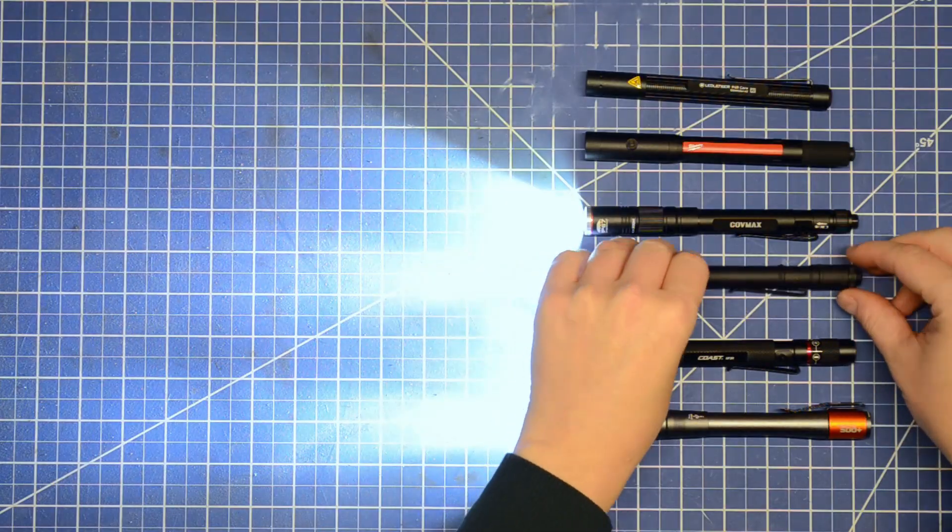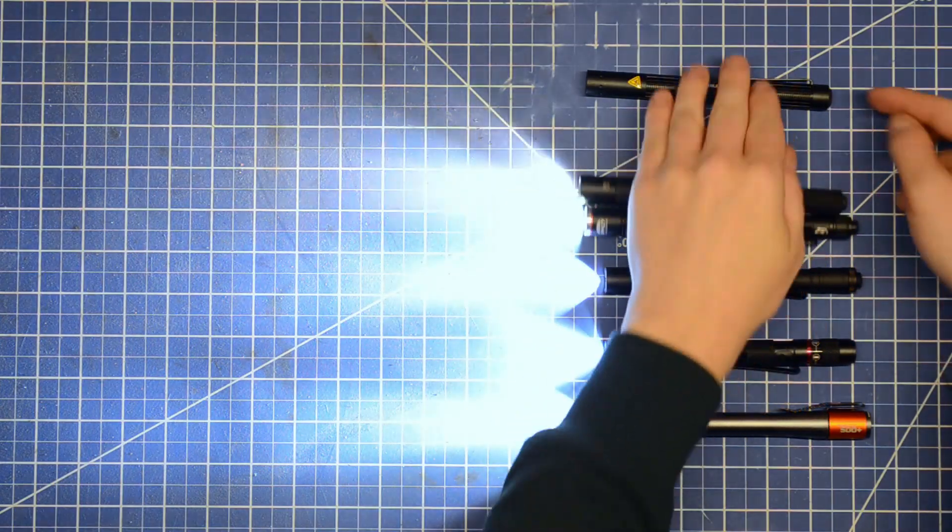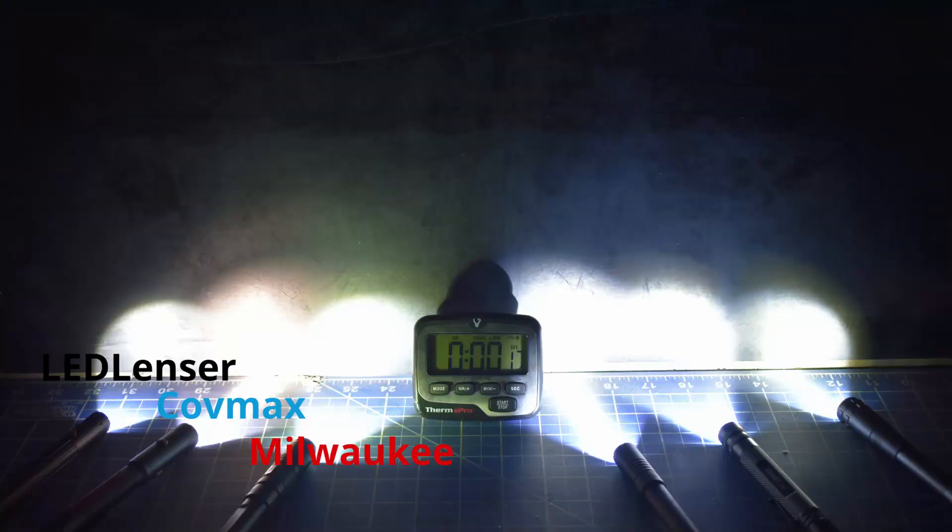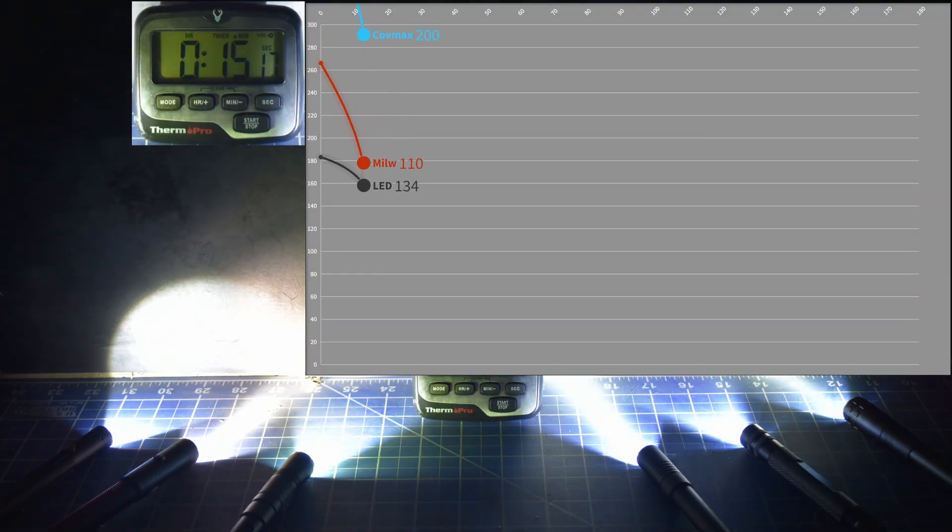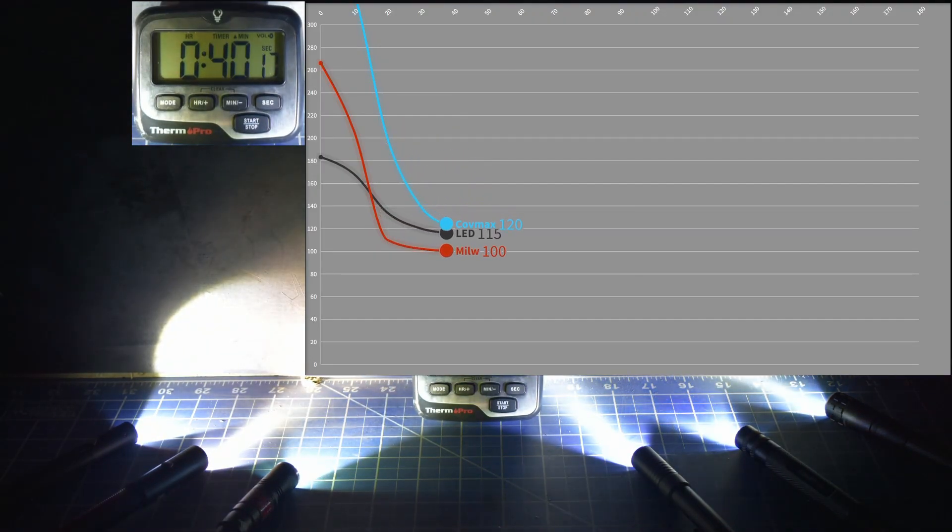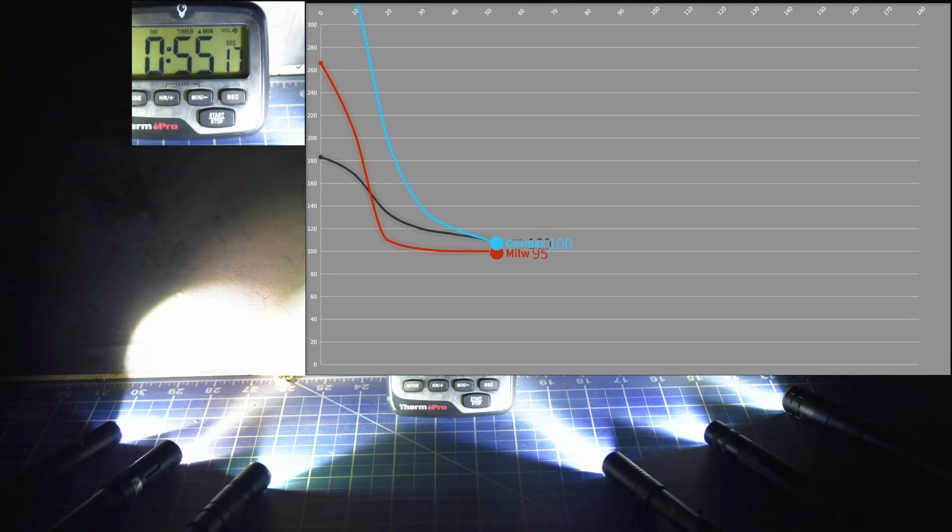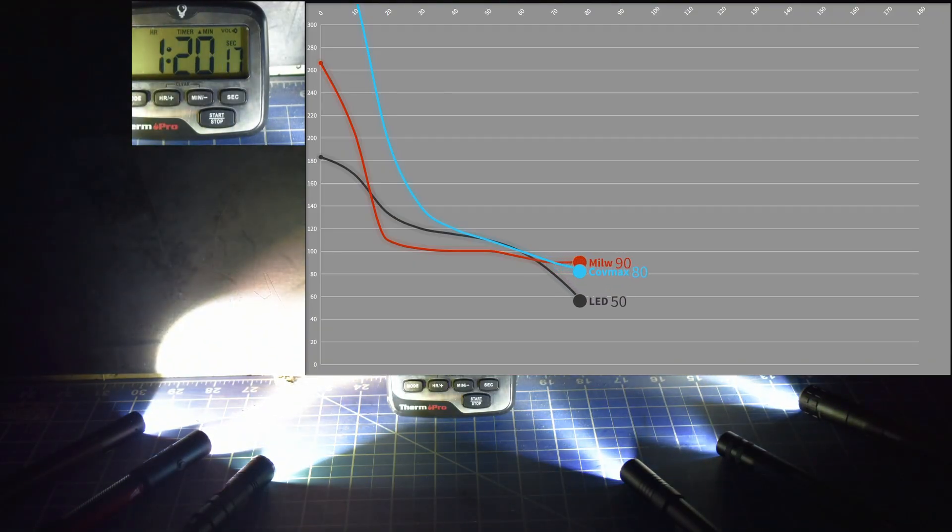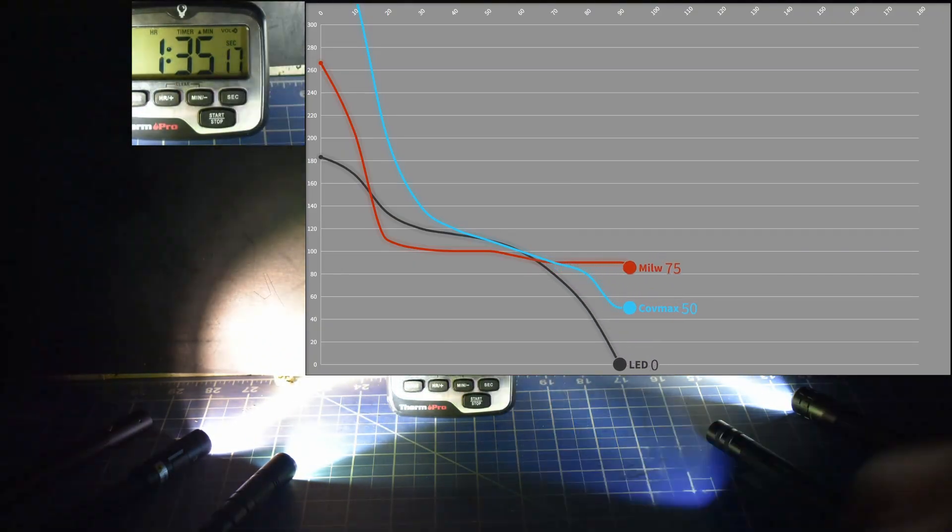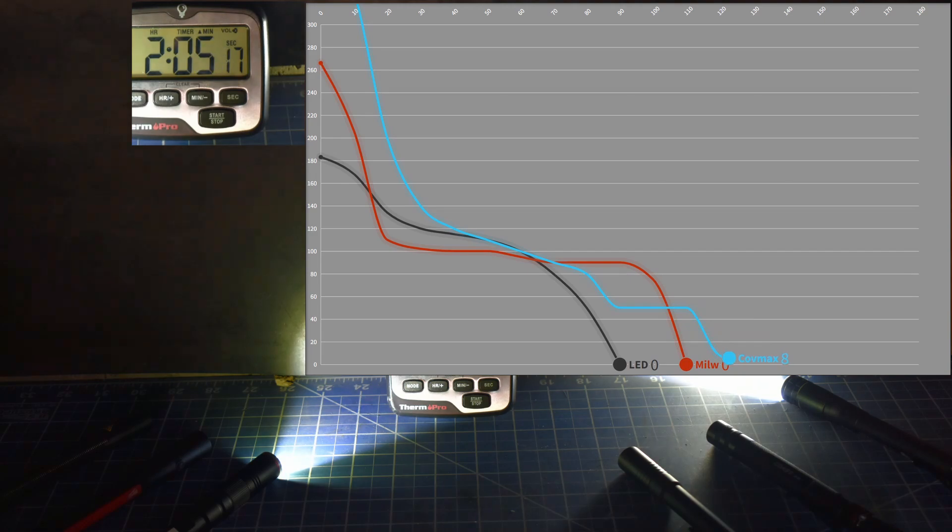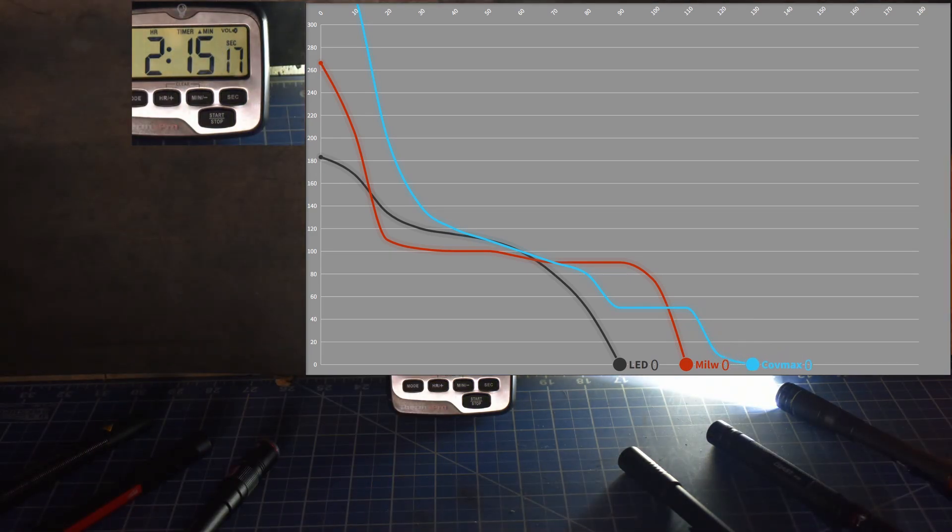Though that's so far just lumens out the gate, performance over time is what separates the useful from the useless. Up first, we have the first three we tested in order lumens, the LED Lenser, Milwaukee, and Amazon Special. Both the CoveMax and Milwaukee fall out the gate as flashlights tend to do, the CoveMax falling further from its super high 385. These three meet up around the hour mark, all making about the same here, 100 lumens or so, useful but not super bright. The LED Lenser takes a fall and conks out first around the hour and a half mark, followed by the Milwaukee, and the CoveMax holding on pretty good actually, though not very bright levels, and dies at 2 hours and 10 minutes.